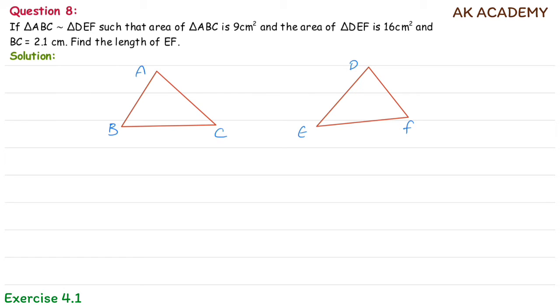These two are similar triangles, so the corresponding sides are in equal ratio. This area is 9 cm², this area is 16 cm². BC is 2.1, and EF is what we need to find.